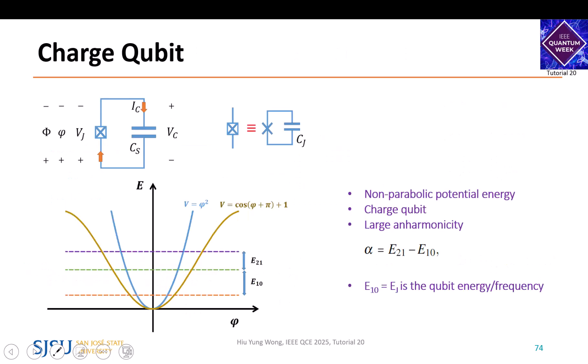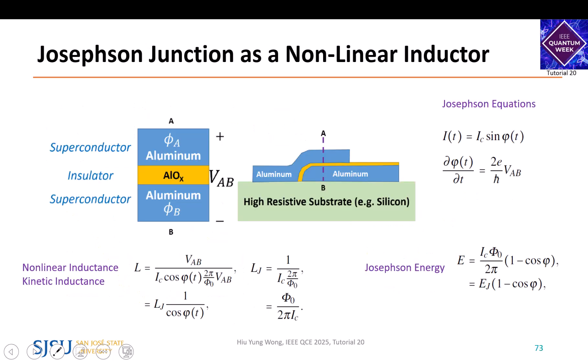With this Josephson junction, it also has inductance, but it is nonlinear. As a result, the landscape is not parabola. From zero to one state you have certain energy, but to another state you have different energy. Then you won't be able to promote the system to another level so easily, so you confine it into the zero and one, and that becomes a very useful qubit state.